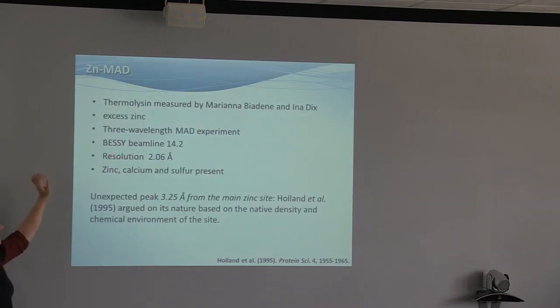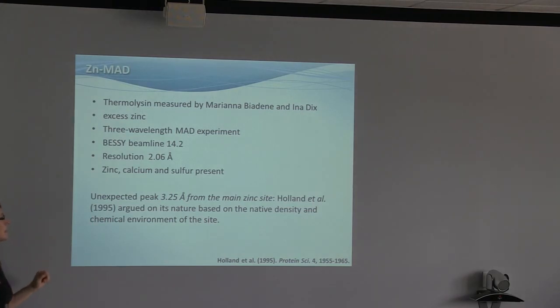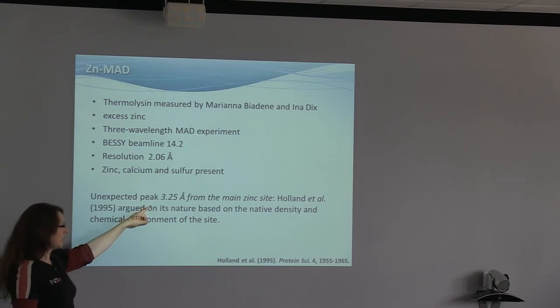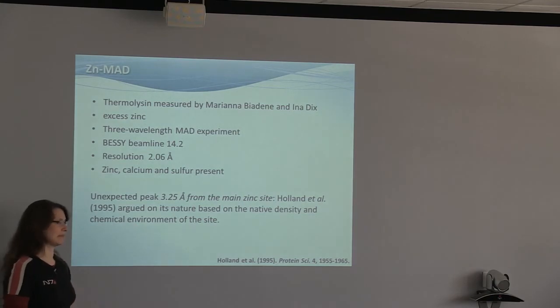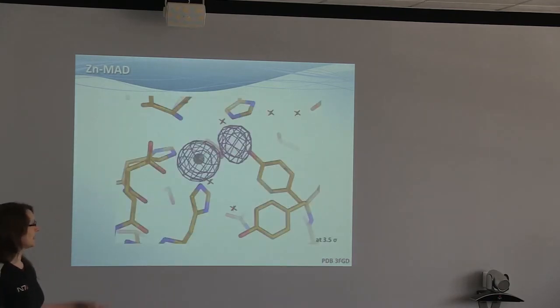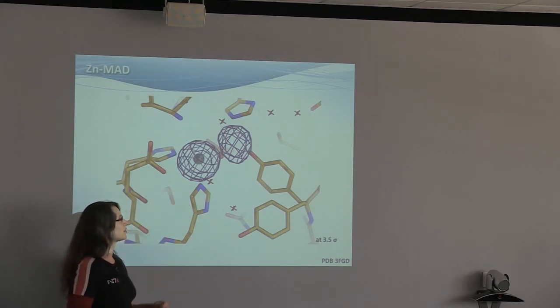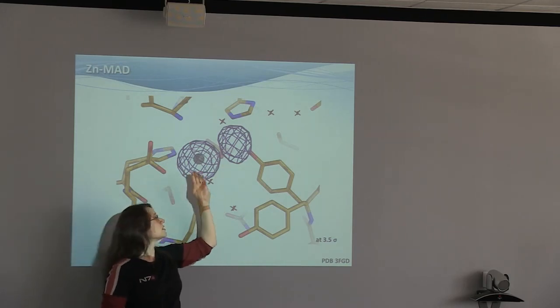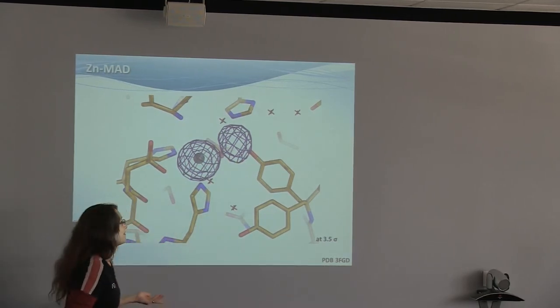Now, this is an example of thermal lysine, a standard molecule measured by Mariana Beardine and Ina Dix at Bessie. The resolution was two angstrom. There was zinc, calcium and sulfur present. Crystallization had been done with an excess of zinc. There was an unexpected peak, three angstrom from the main zinc site, and Holland et al. in 1995 argued on its nature based on its native density. But it wasn't quite resolved what that second peak next to the zinc was.